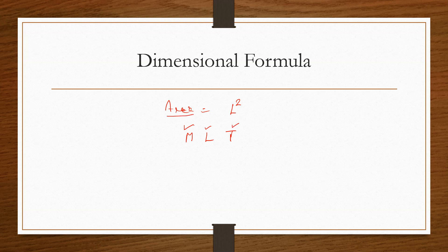For area, L has the power of 2, so we write L squared. Is there any mass in area? No, so it is M to the power 0. Is there any time in area? No, so time is also 0. Therefore, the dimensional formula for area is M⁰ L² T⁰.